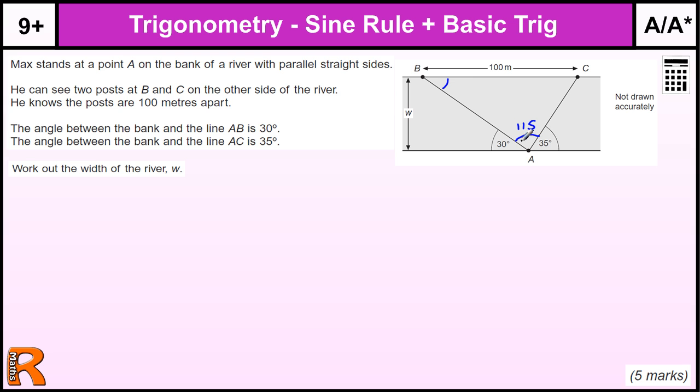This angle here, because this is alternate angles, or Z angles it used to be called, that's 30. And this angle here, same idea, is 35.